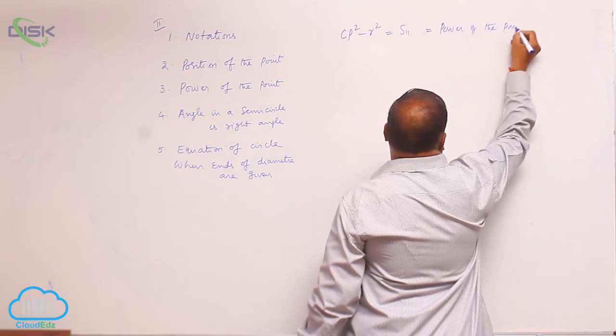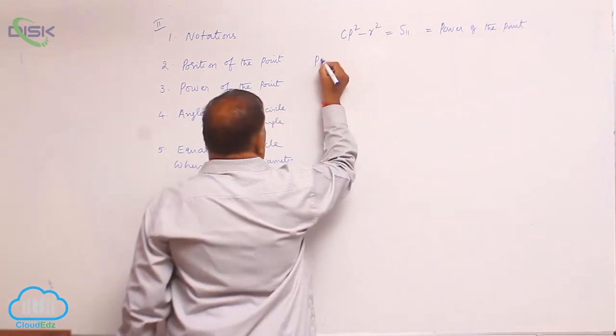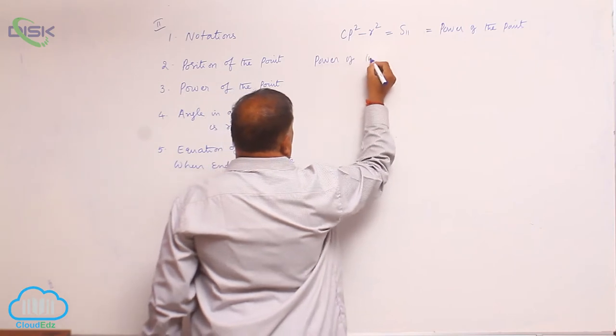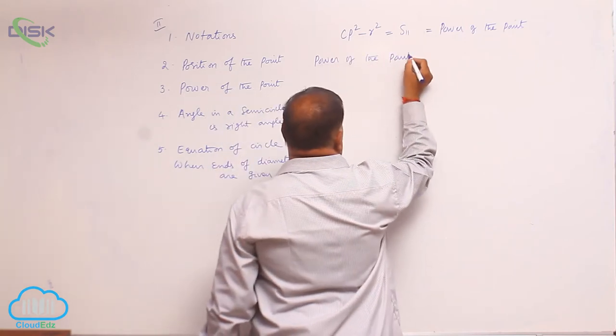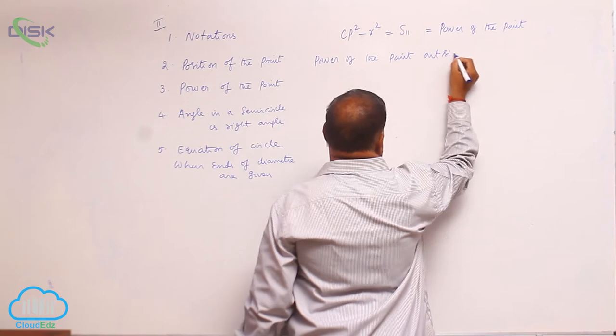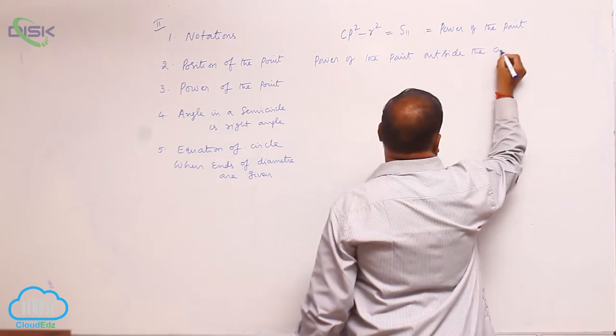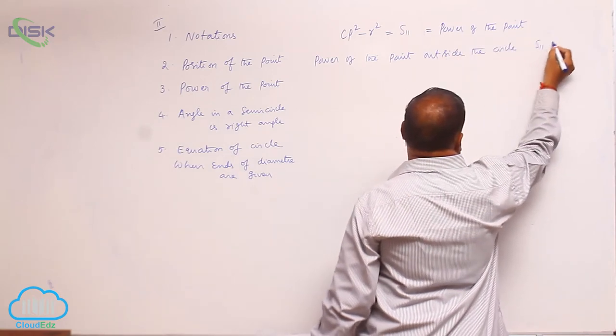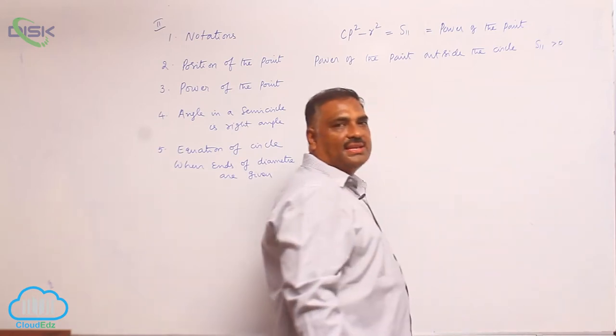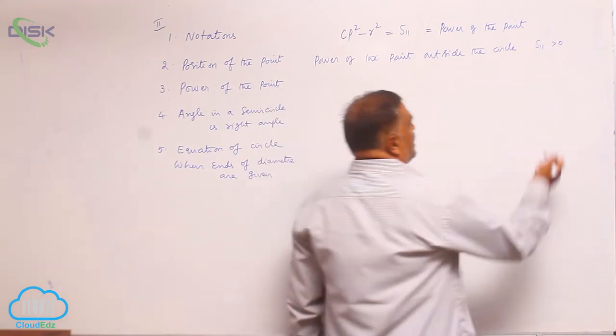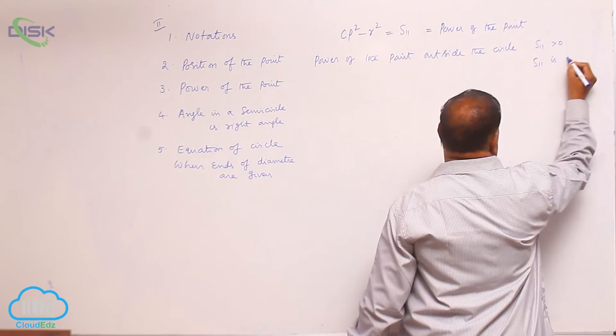So there are three cases. Power of the point outside the circle - outside the circle means automatically this point S₁₁ greater than zero. A number is said to be greater than zero means it is clearly positive. S₁₁ is positive.